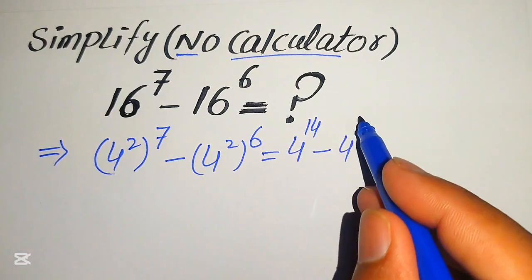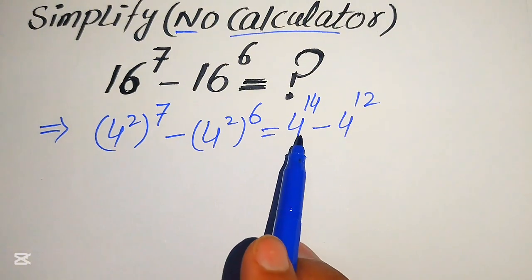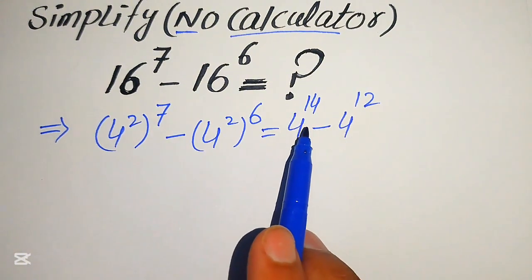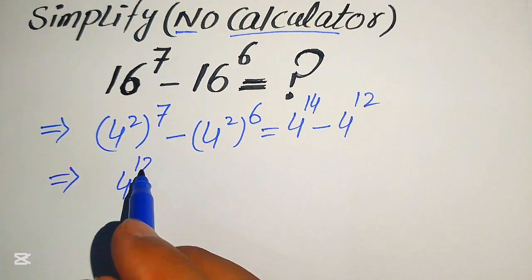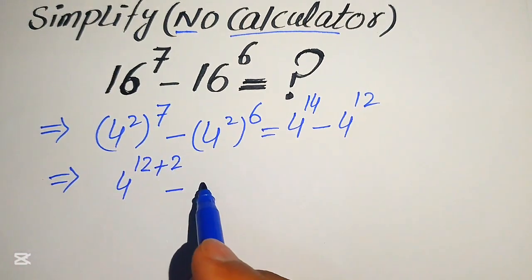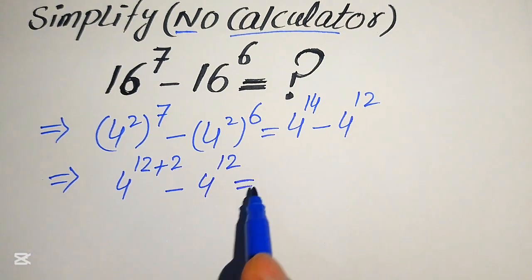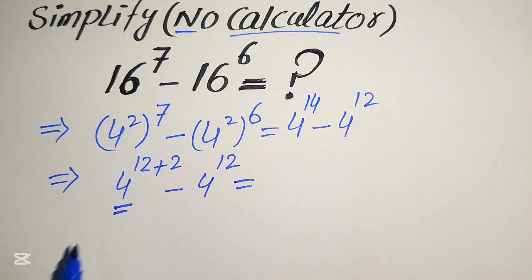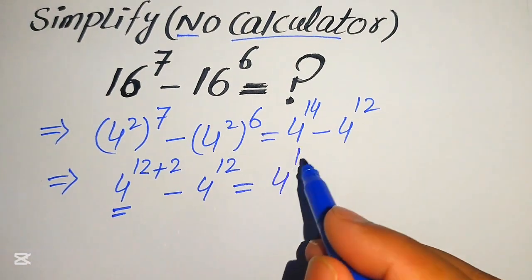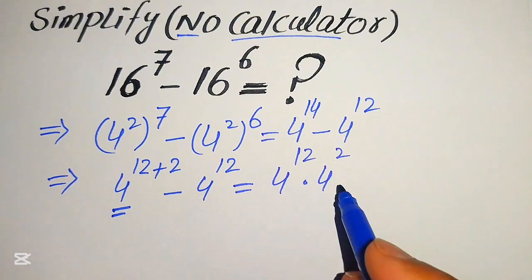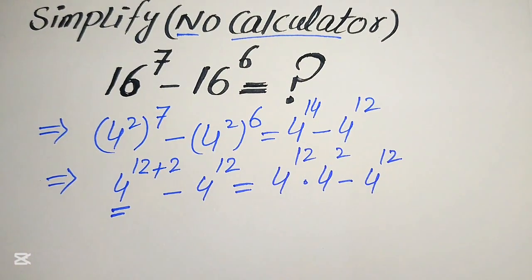In the next step, we break the first term: 4 to the power of 14 is written as 4 to the power of 12 plus 2, minus 4 to the power of 12. We apply the exponent law on the first term, writing it as 4 to the power of 12 multiplied by 4 squared, minus 4 to the power of 12.